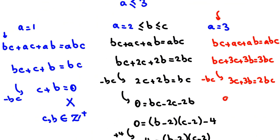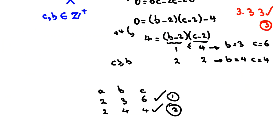So A = B = C = 3. We don't need to check further; A = 3 gives the triple (3, 3, 3). You can verify it satisfies the equation. This is the third answer.